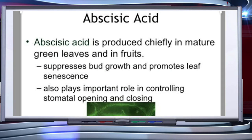Abscisic acid is a growth inhibitor and causes retardation of growth. It is synthesized in the leaves, from where it is transported to other parts of the plant through the phloem. It induces bud dormancy in many plants, and also induces dormancy in many seeds. It promotes separation of leaves, flowers, and fruits in most plants.